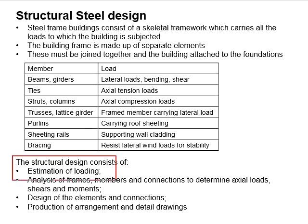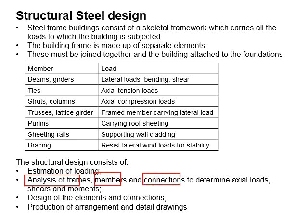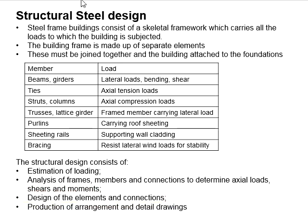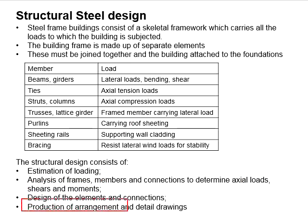This is the typical process of designing a structural steel building. First, you need to estimate the loading acting on the structure, then analyze the frame members and connections to determine the loads acting on the members. Next, you will design the elements and connections to be able to withstand those loads. Finally, you will produce detailed drawings to demonstrate the layout and arrangement of the design.